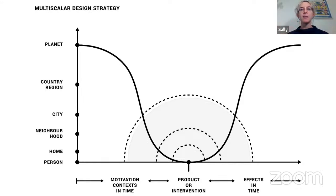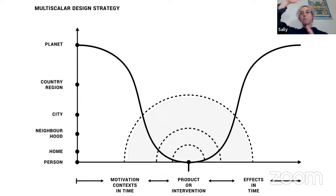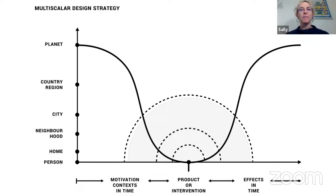With the interventions themselves, we also ask our students to think about different scales — designing for multi-scalar strategies. You have the person level, home, neighborhood, city, country or region, the planet. Students are asked to understand the motivations for their intervention at each of these levels, and then the effects that the intervention will have at each of those levels as time goes on.